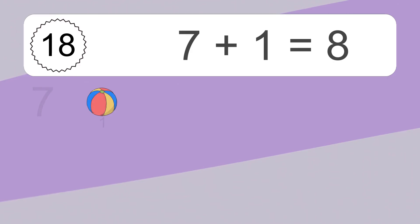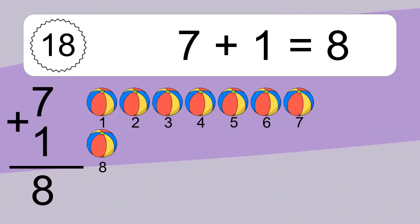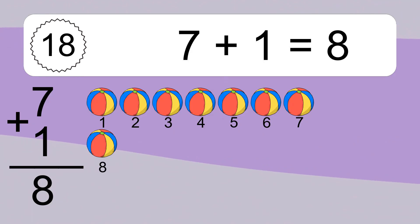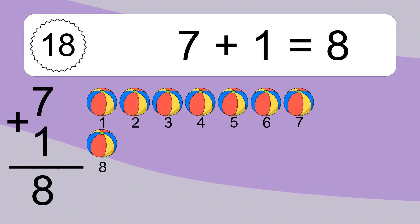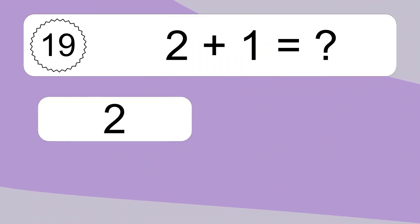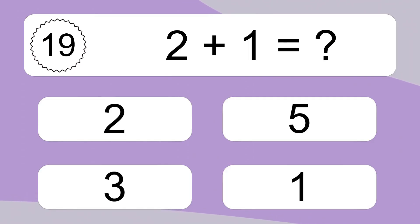7 plus 1 equals what? 7 plus 1 equals 8. Let's count it. 1, 2, 3, 4, 5, 6, 7, 8.